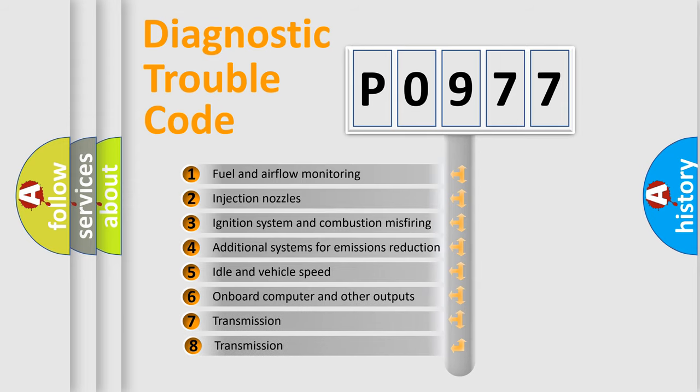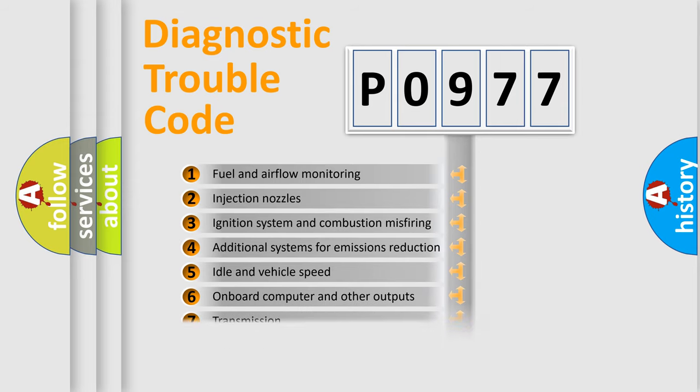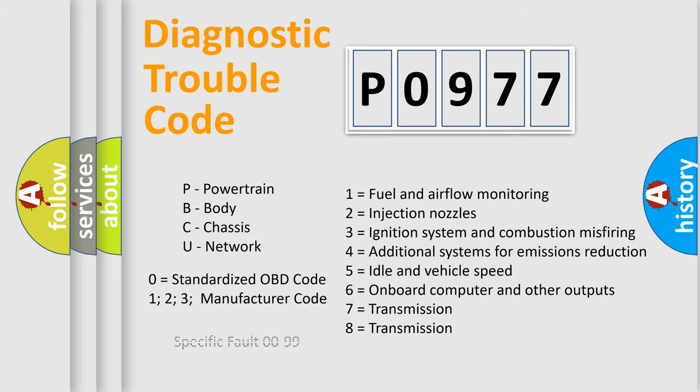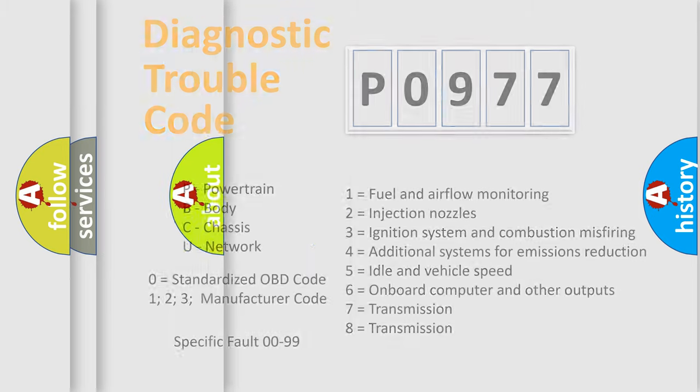The third character specifies a subset of errors. The distribution shown is valid only for the standardized DTC code. Only the last two characters define the specific fault of the group. Let's not forget that such a division is valid only if the second character code is expressed by the number zero.